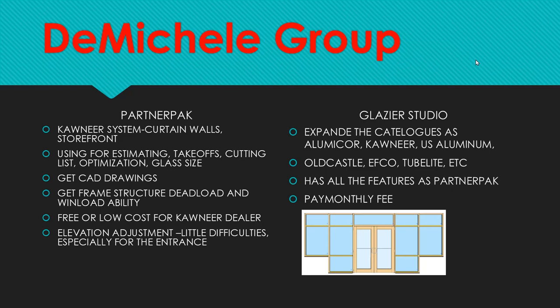This software is easy to use and is based originally on a space ground Kawneer catalog. They can create takeoffs, cut lists, optimization, glass block sizes, a report of material summarization, a report of hardware, and a report of glass sizes. The author can also get CAD drawings or convert drawings to AutoCAD drawings, so you can use them for shop drawings.